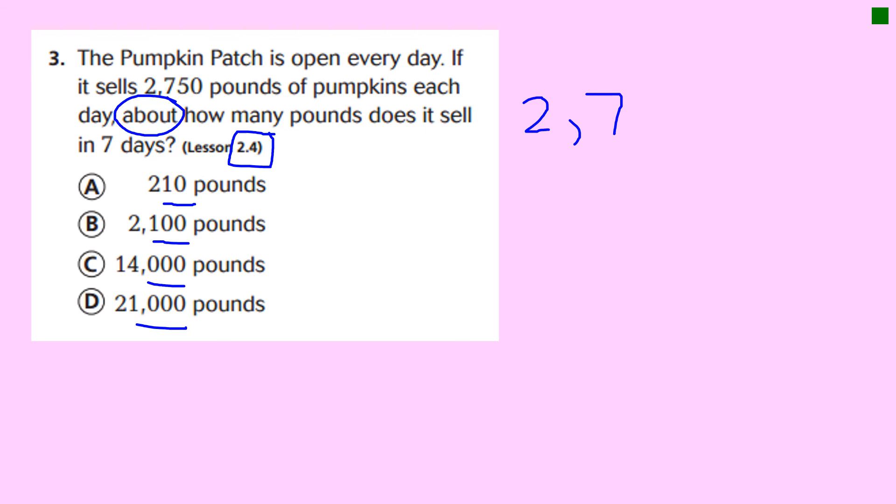So each day they sell 2,750 pounds of pumpkins. Well, that is an outrageous amount of pumpkins. About how many pounds does it sell in seven days? So in one day it sells 2,750, and we need to know over seven days, so this happens seven times, doesn't it? Each day. But how do we estimate when we multiply? By rounding. So we're rounding to the highest place value. Box it out. Look at 27 - is 27 closer to 20 or 30? Well, it's definitely closer to 30.